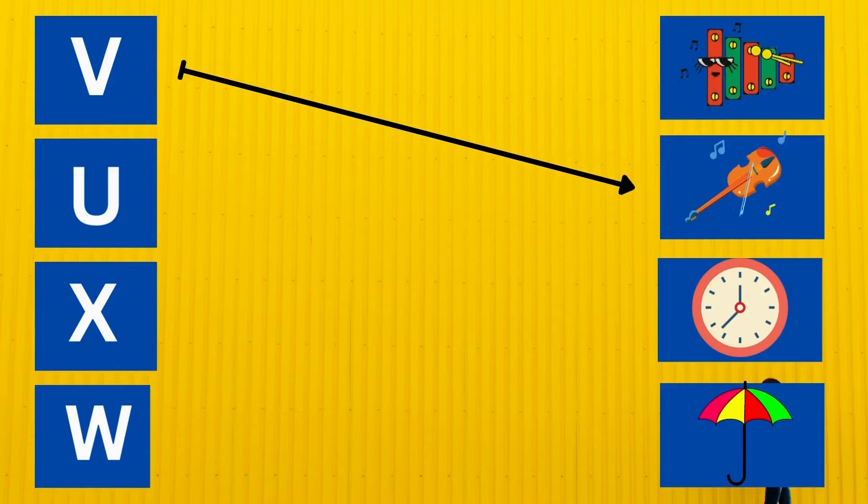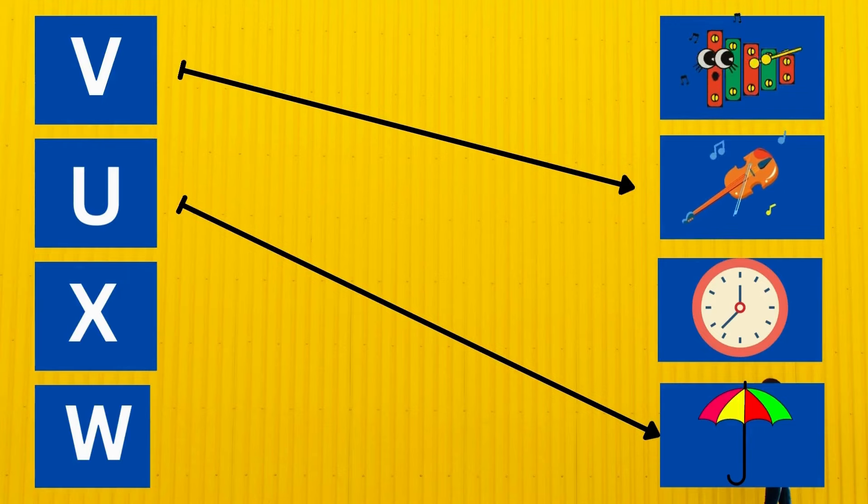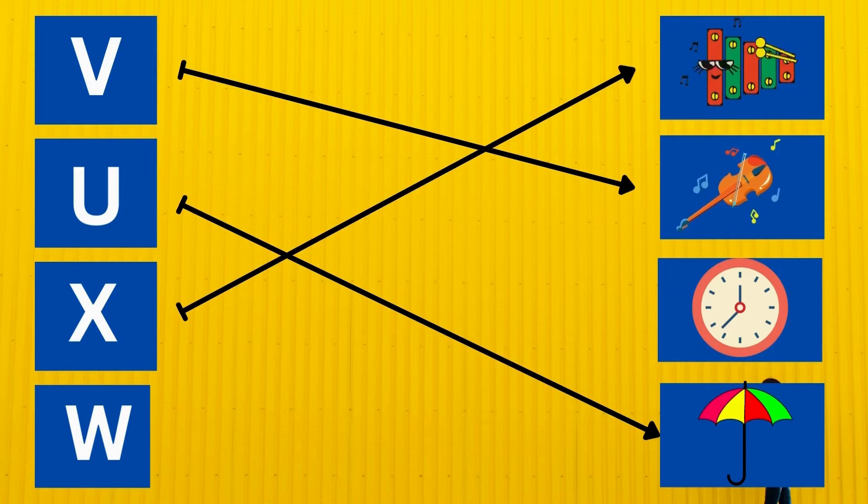V is for violet. U is for umbrella. X is for xylophone.